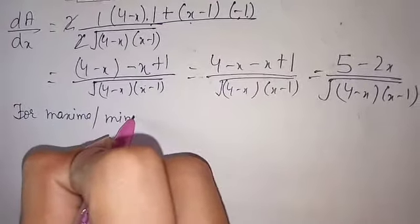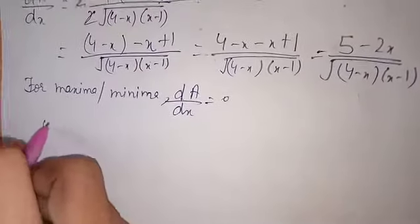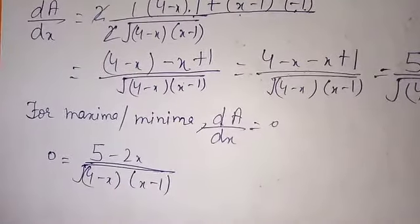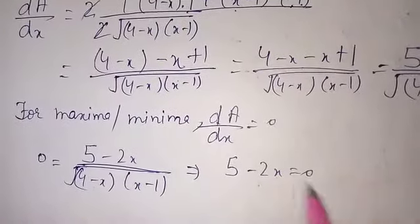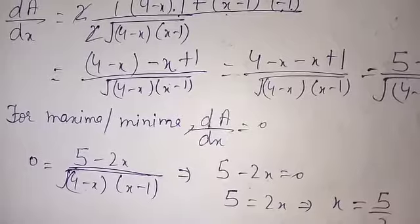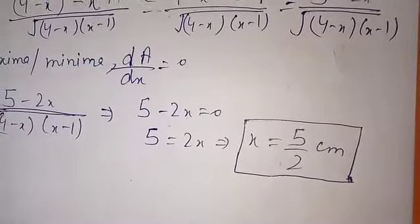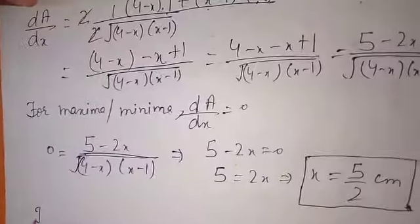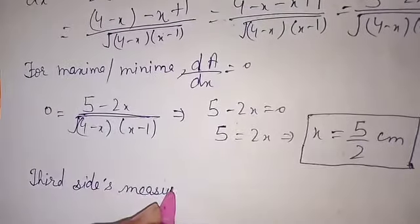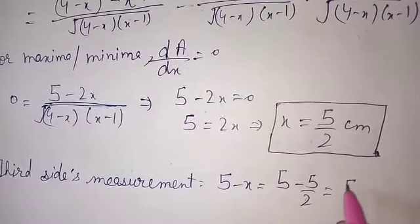For maxima or minima, we put dA/dX = 0. So 0 = (5 − 2X) / √((4−X)(X−1)), giving 5 − 2X = 0, so X = 5/2 cm. The third side is 5 − X = 5 − 5/2 = 5/2 cm.